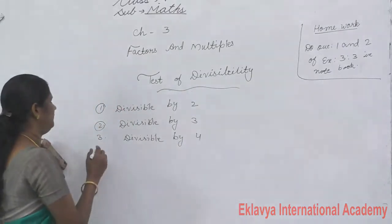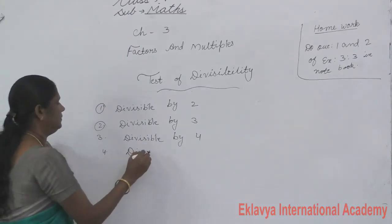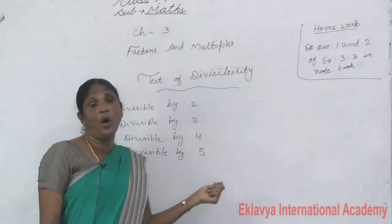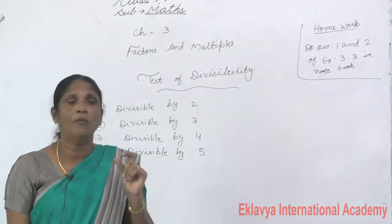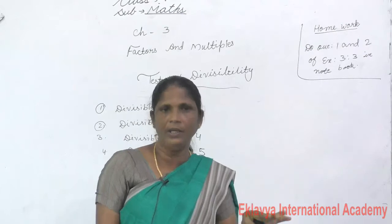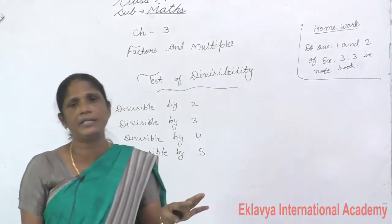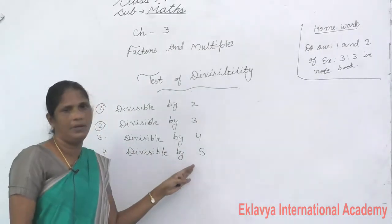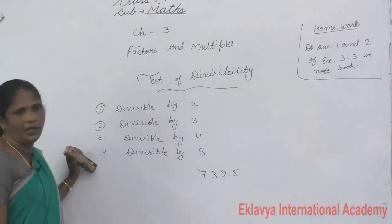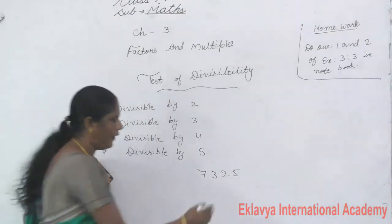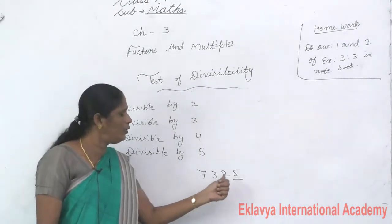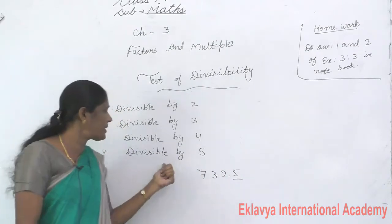Divisibility by 5: if 0 or 5 comes in the 1's place, that number is divisible by 5. For example, 7325 — 5 comes in the 1's place, therefore 7325 is divisible by 5.